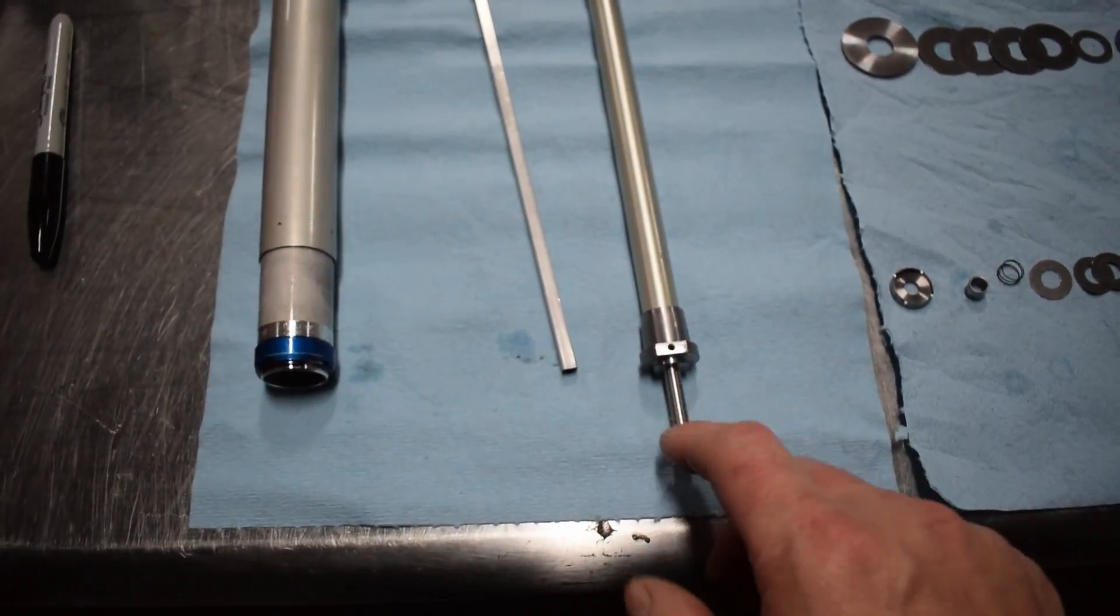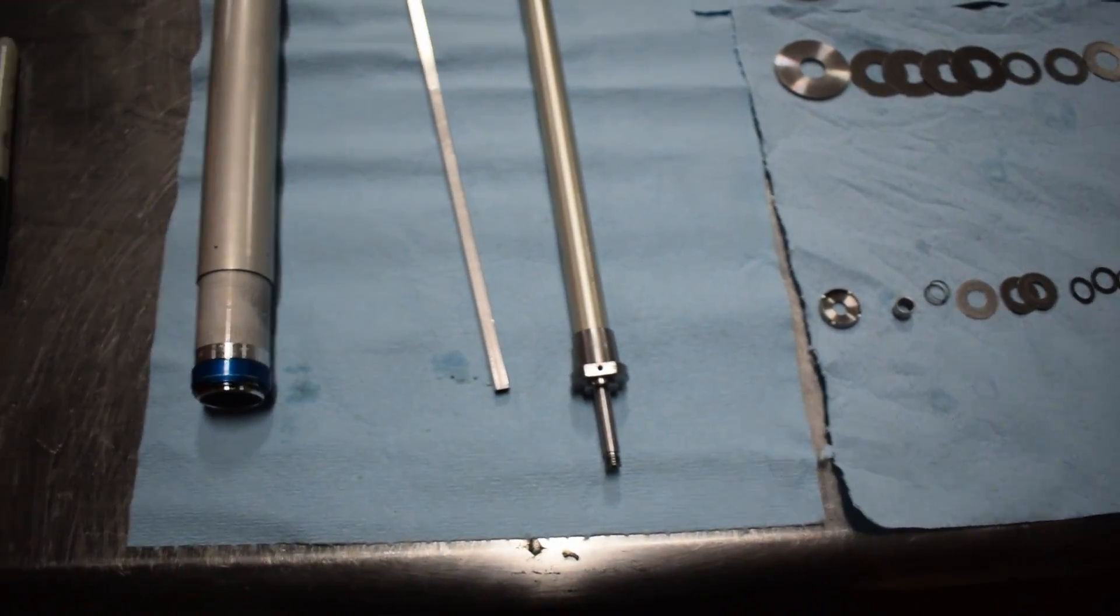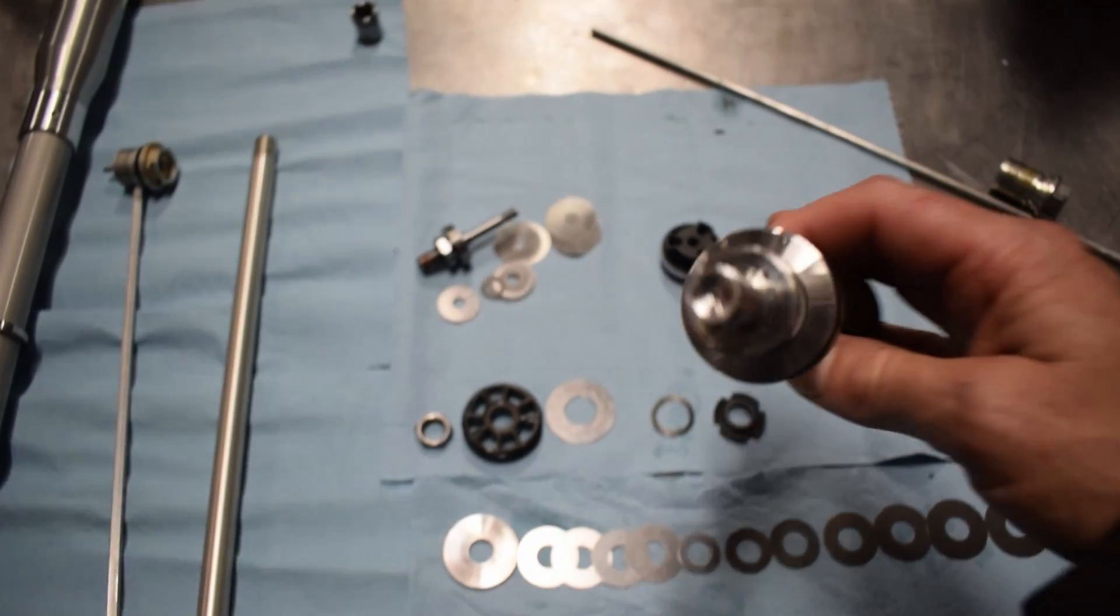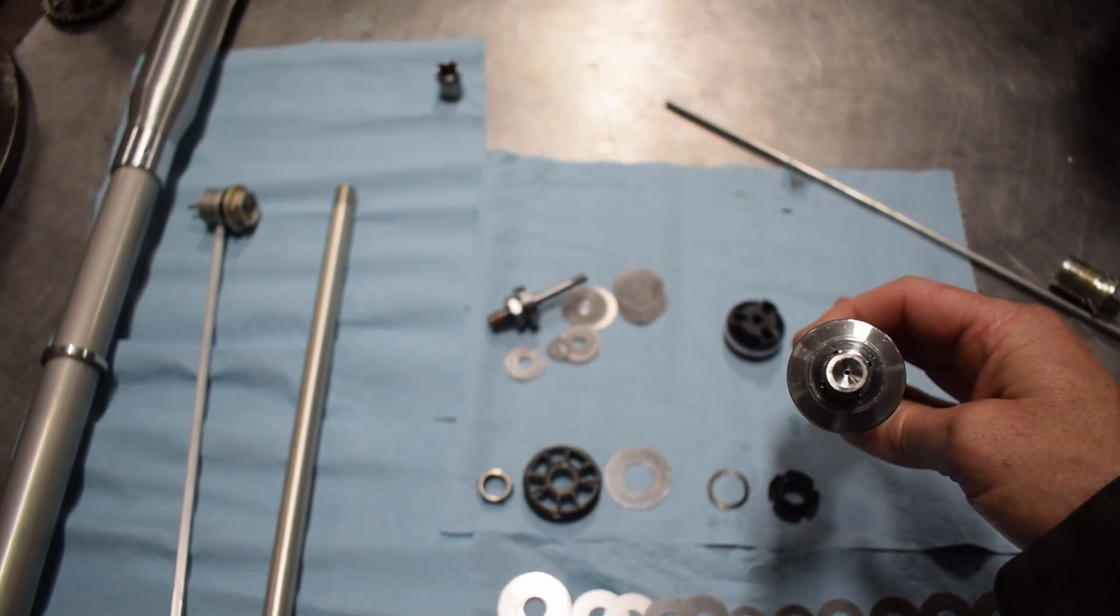So what determines how big a click difference is? It determines the steepness of the taper of the needle. So let's say you had a more steeply tapered needle. Then each click would be more sensitive. How does a compression adjuster work? Same thing.